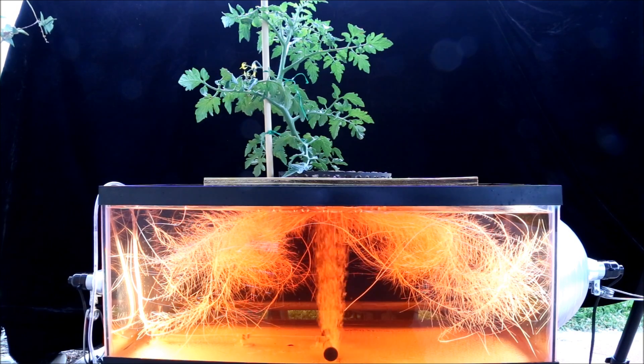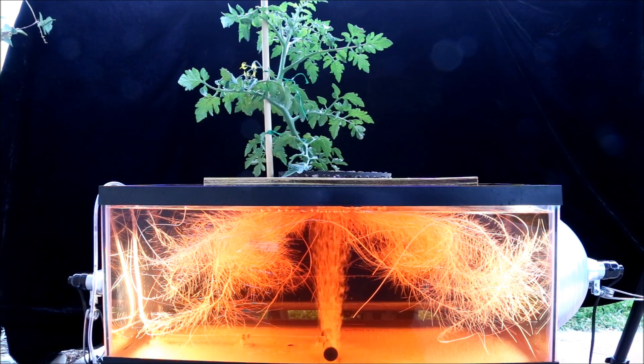I am growing this in a solution that consists of two teaspoons of Flora Micro general hydroponics food, one teaspoon of Flora Bloom, and one teaspoon of Flora Grow per gallon of water. That gets me a parts per million of about 900 and a pH of about 6.5. I use pH down to regulate that to between 6.0 and 6.5. And like last year, the tomato is just growing great.